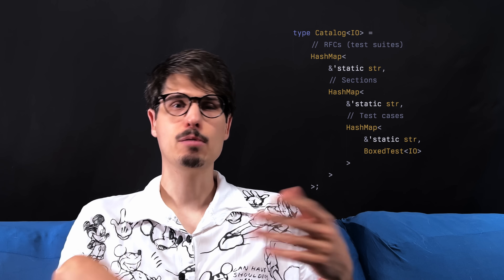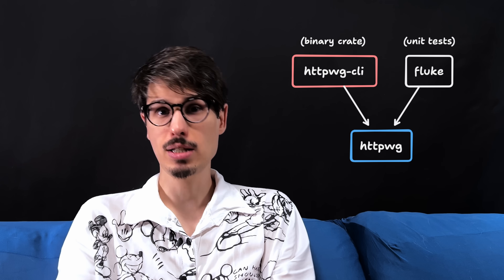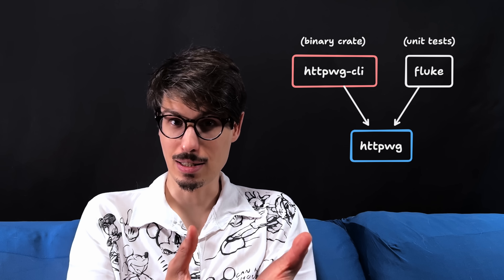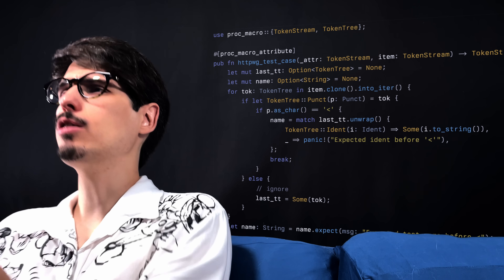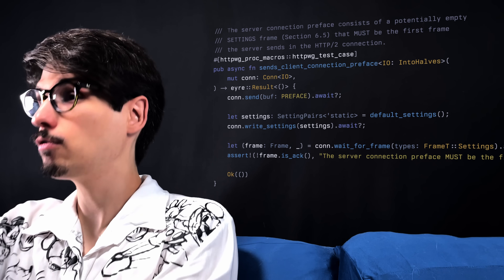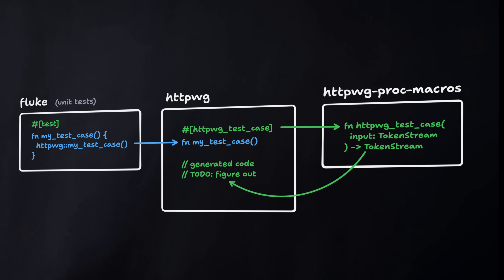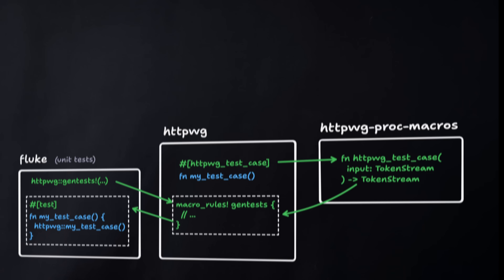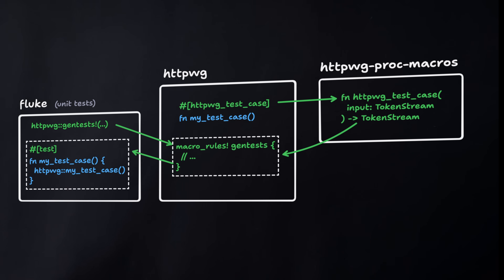First, let's assume we can build such a registry. We end up having a tree of test suites, groups, and cases that would only be suitable for the binary, because that one only needs to enumerate test cases at runtime. But for Fluke's unit tests, we need to enumerate test cases at compile time. That gets complicated, because that theoretical proc macro is called from the HTTPWG crate, not from the Fluke crate. So it has access to the case's registry, but it can't generate any code for Fluke. The best it can do is generate another macro that Fluke can then invoke, so that unit tests are generated in Fluke's codebase.